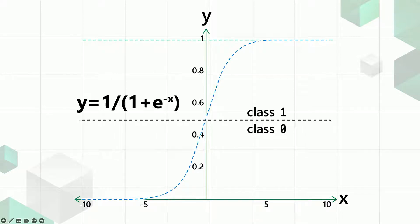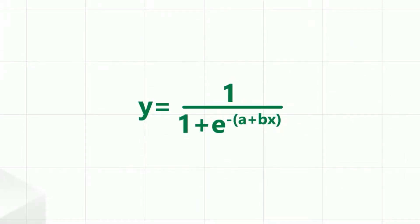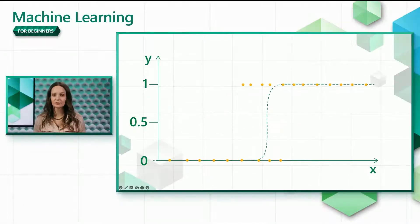You can think of the formula for logistic regression as two separate steps, where the first step is the same as linear regression and the second step transforms that result using a sigmoid function. Or you can combine the two in a single step.